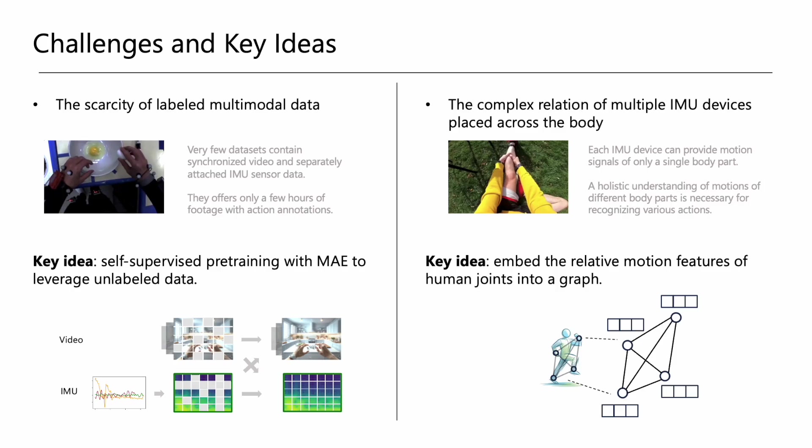To address this, we propose to embed the relative motion features of human joints into a graph structure. By representing the IMU devices as nodes and modeling the collaborative dynamics between them as edges, we capture the complex relationships between different body parts.